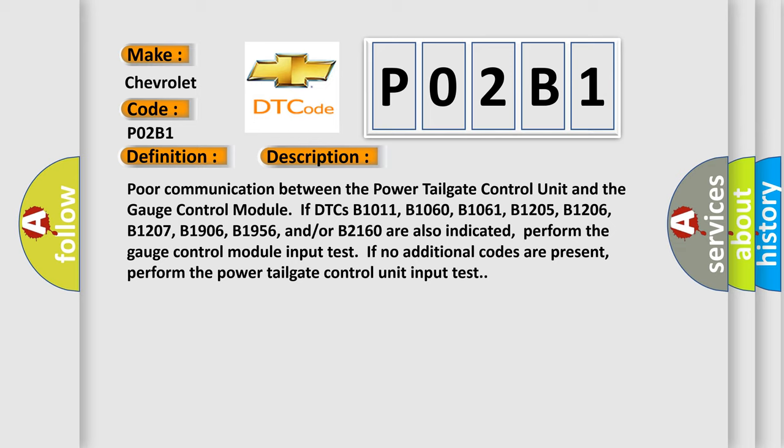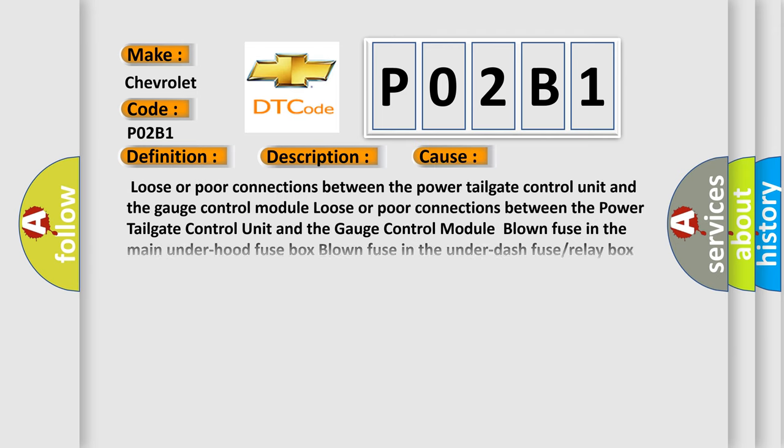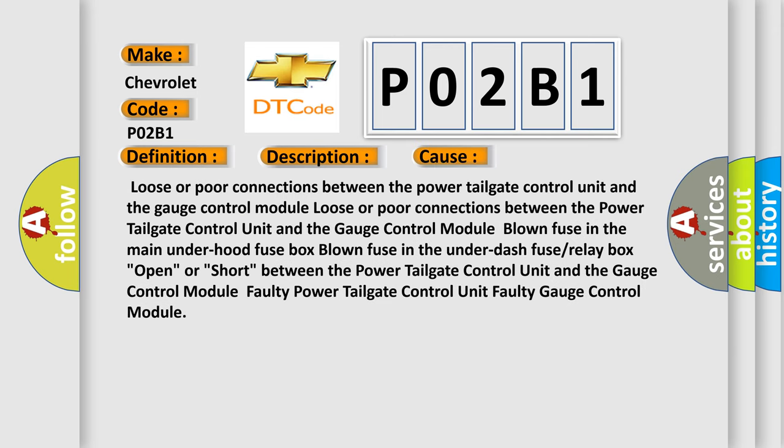This diagnostic error occurs most often in these cases: loose or poor connections between the power tailgate control unit and the gauge control module; a blown fuse in the main under-hood fuse box; a blown fuse in the under-dash fuse or relay box; an open or short circuit between the power tailgate control unit and the gauge control module; a faulty power tailgate control unit; or a faulty gauge control module.